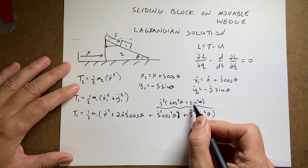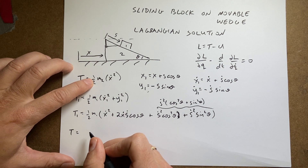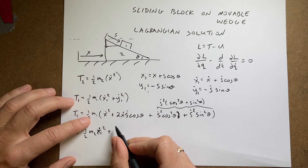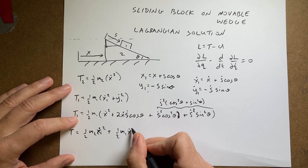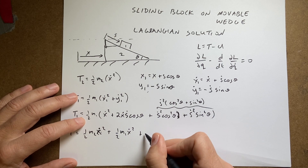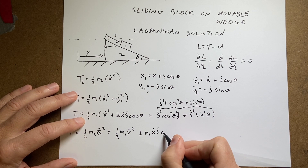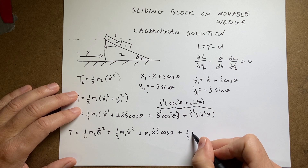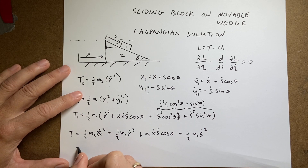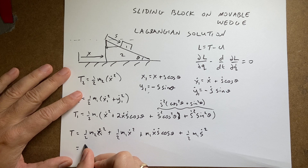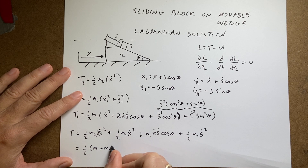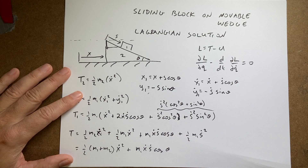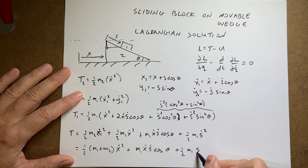Putting it all together, the total kinetic energy T is one-half m2·ẋ² plus one-half m1·(ẋ² + 2ẋṡcosθ + ṡ²). Multiplying through and combining the two ẋ² terms gives T = one-half(m1 + m2)ẋ² + m1·ẋṡcosθ + one-half m1·ṡ².